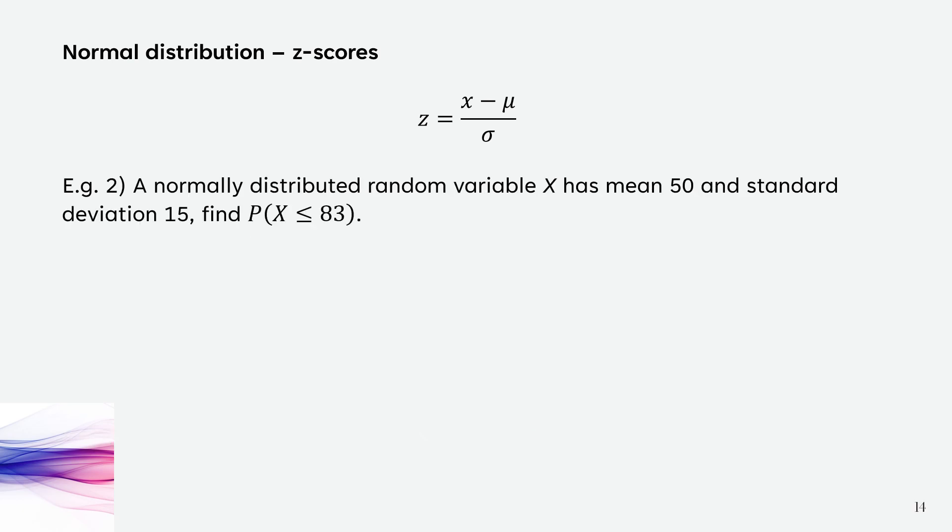Here's the second example. We've got a normally distributed random variable x with a mean of 50 and standard deviation of 15. We want to find the probability that x is less than or equal to 83. Remember, our z-scores and z-score table actually allow us to find probability.